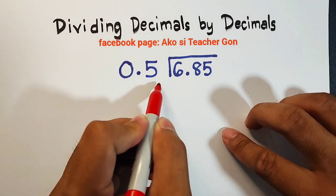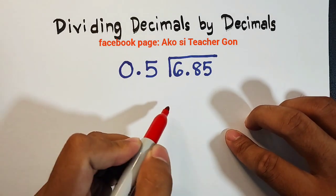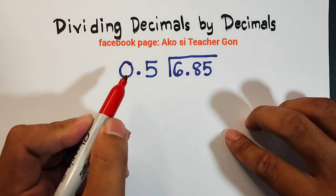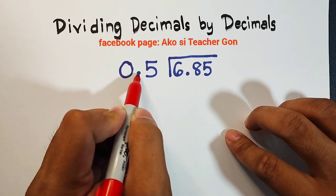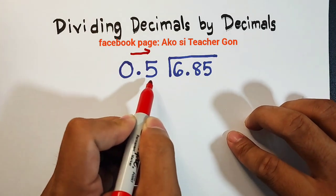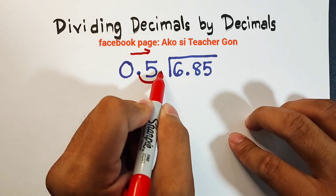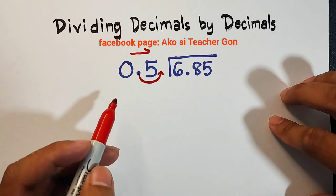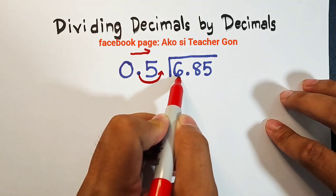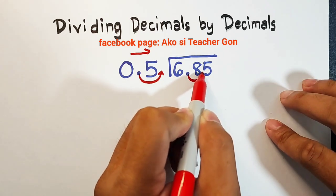First, we need to think how are we going to make this 0.5 equal to a whole number. Our target here is to make this a whole number. The technique here is to move your decimal point from left to right until this decimal 0.5 will become a whole number. To make it a whole number, we need to move one decimal point. In this case, we also need to move one decimal point here. 6.85, so we will move one decimal point here going from left to right.